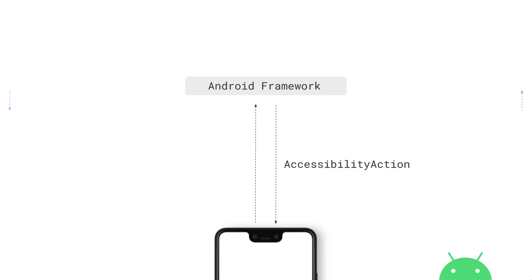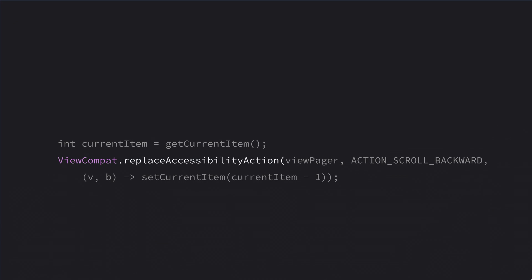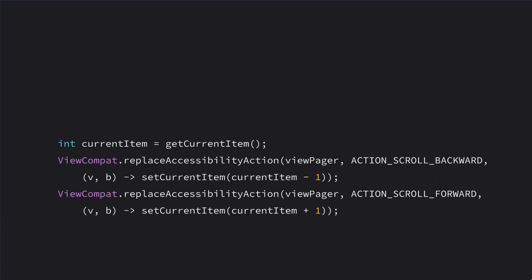We're going to use a high-level API, ViewCompat.replaceAccessibilityAction, and override the standard behavior for the action accessibilityScrollBackward on this particular view. Whenever the user asks the accessibility service to scroll something backward on this view, this lambda is called, which fundamentally decrements the page count — setCurrentItem, that's the current page. We can do this for accessibilityScrollForward as well. Let's throw this into a function, updatePageAccessibilityActions, and call it on initialize so it exists on the ViewPager.